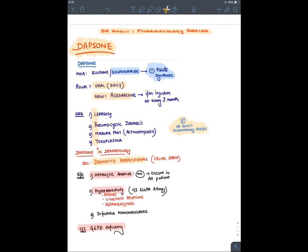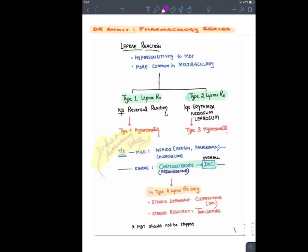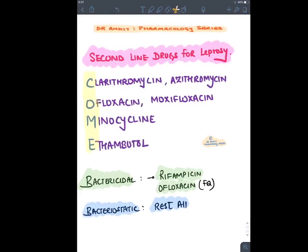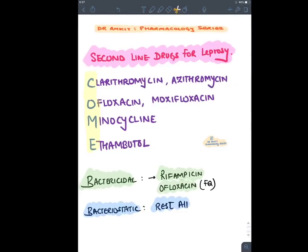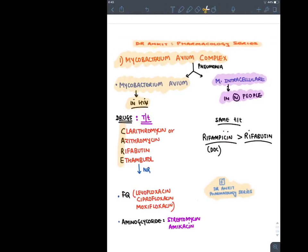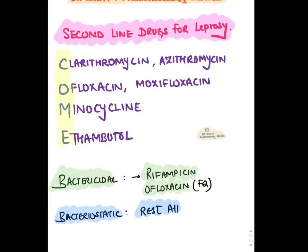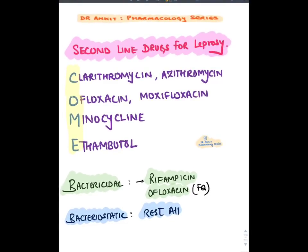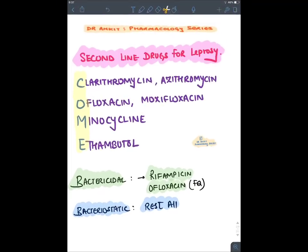Second drug for leprosy — clofazamine, which was originally developed as a coloring dye. Second-line drugs for leprosy (mnemonic C-O-M-E / CUM): clarithromycin, ofloxacin, minocycline, and ethambutol. Among leprosy drugs, bactericidal are rifampicin and fluoroquinolones; rest are bacteriostatic.